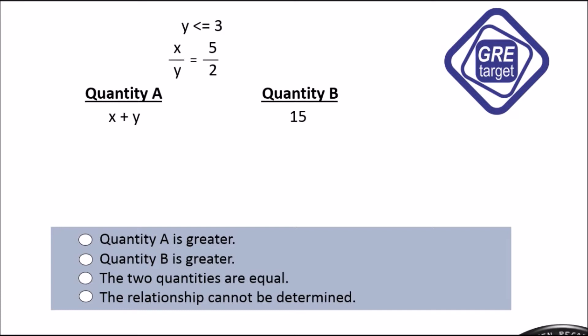Let's start solving. We rewrite the equation x divided by y equals 5 divided by 2. Now just cross multiply it. After cross multiplication we will get 2x equals 5y.